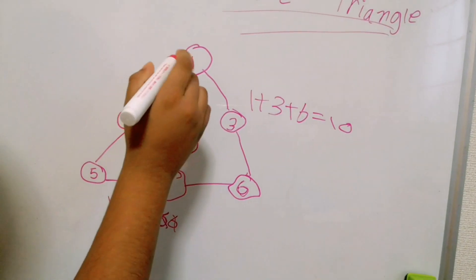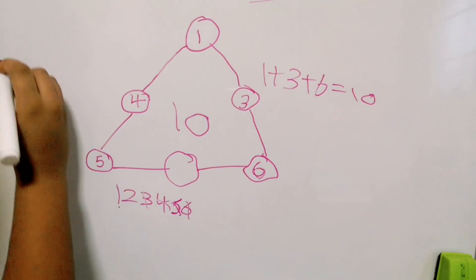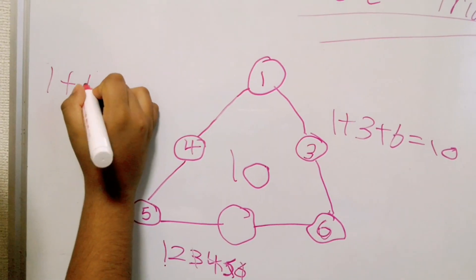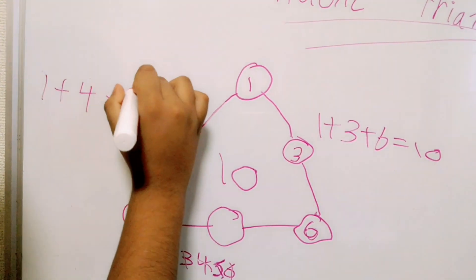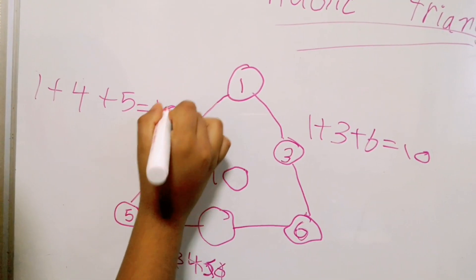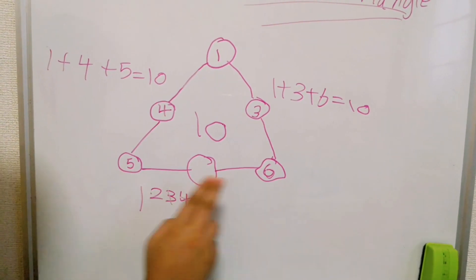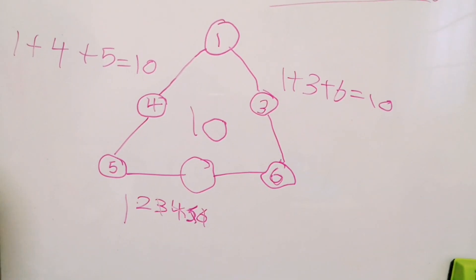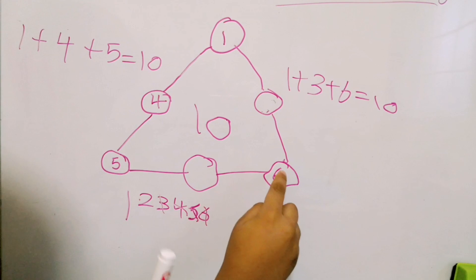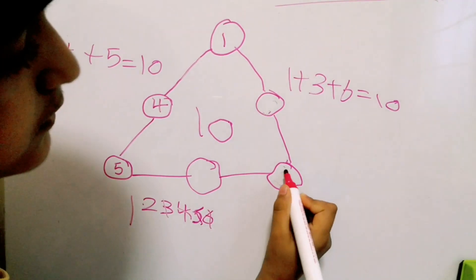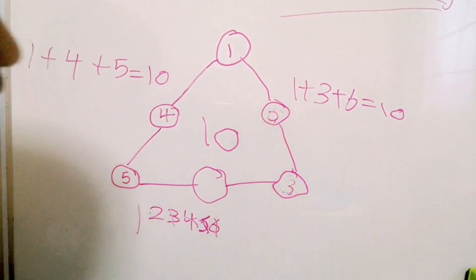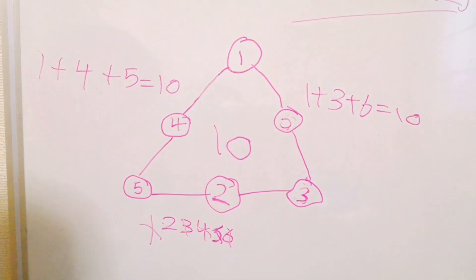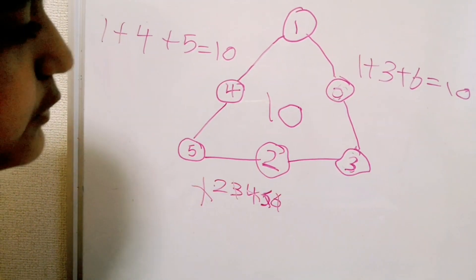So I'm calculating this side and it should be equal to this. So you can see this side is already 11, but we have to make the sum 10. So I'm going to exchange 3 and 6. The remaining number is 2, so here you go 2. So this side also equals 10.